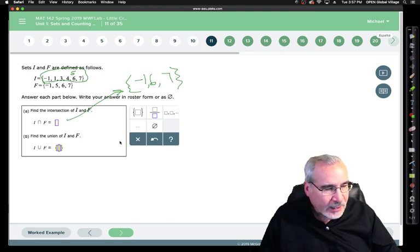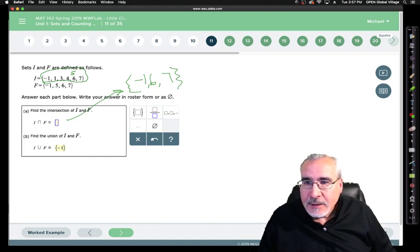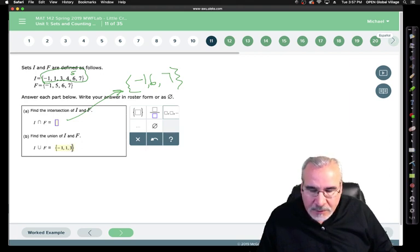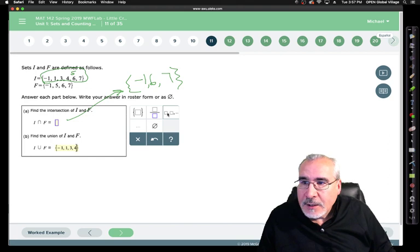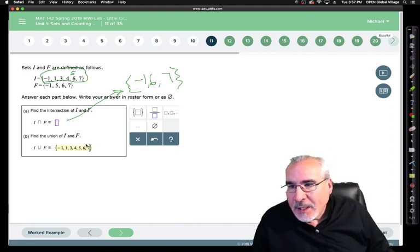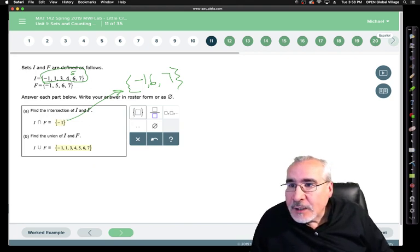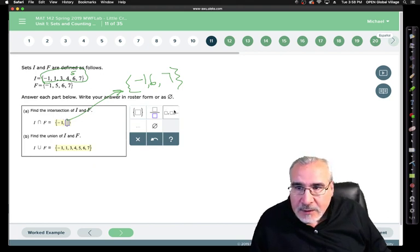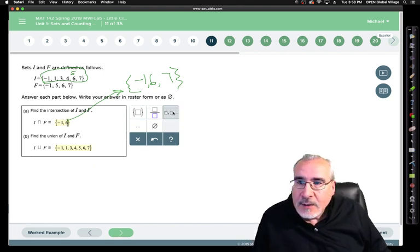So we're going to put everything in from I. Negative 1. Click on that thing. We'll do 1, 3, 4, 5, 6, and 7. It might not matter if you don't have it in order, but for organizational purposes, it's kind of good to put it in order. Negative 1, and then 6, and 7.